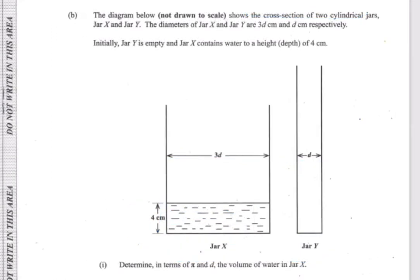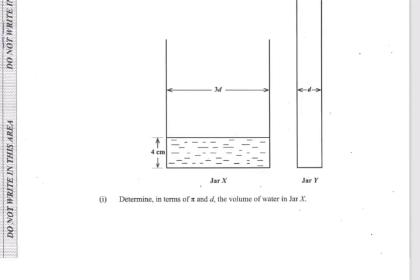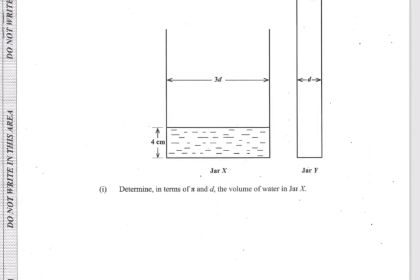The first question says: determine, in terms of pi and d, the volume of water in jar X. So we're going to determine the volume of water in jar X. The first thing you need to remember is to state the formula for volume. The formula for volume is: V equals area of cross section times height. For cylinders and prisms, it's area of cross section times height.